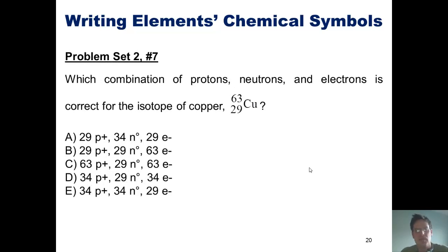Here's another one. Which combination of protons, neutrons, and electrons is correct for the isotope of copper labeled copper-63? I personally believe that I've given you guys enough information to do this on your own.